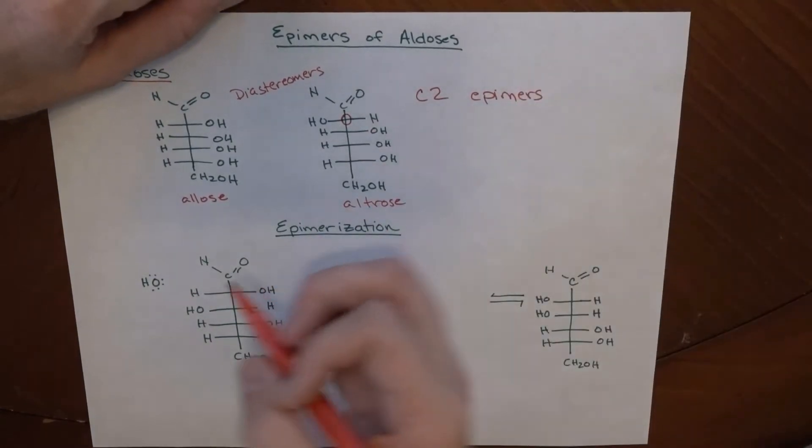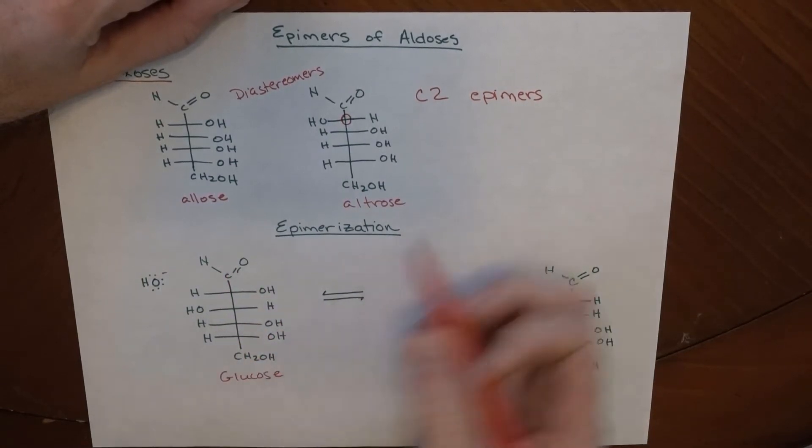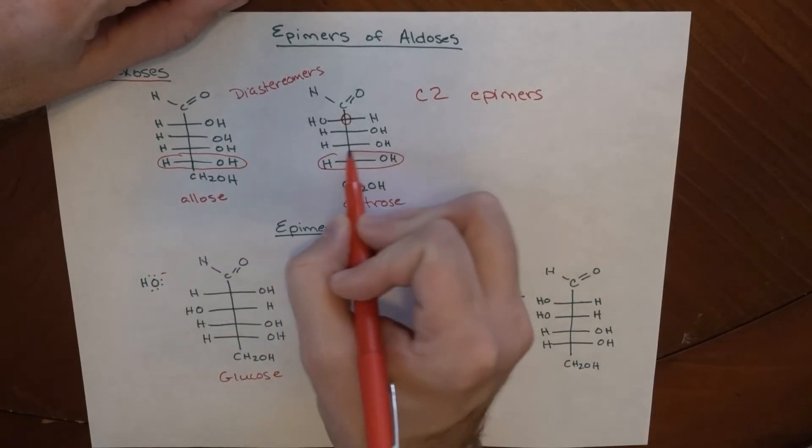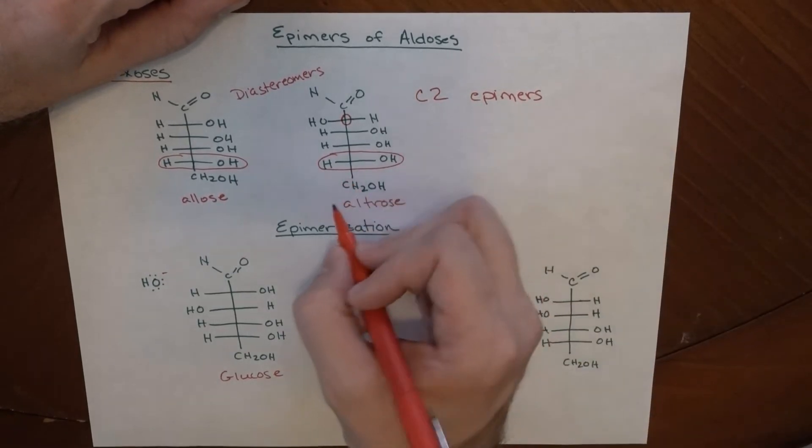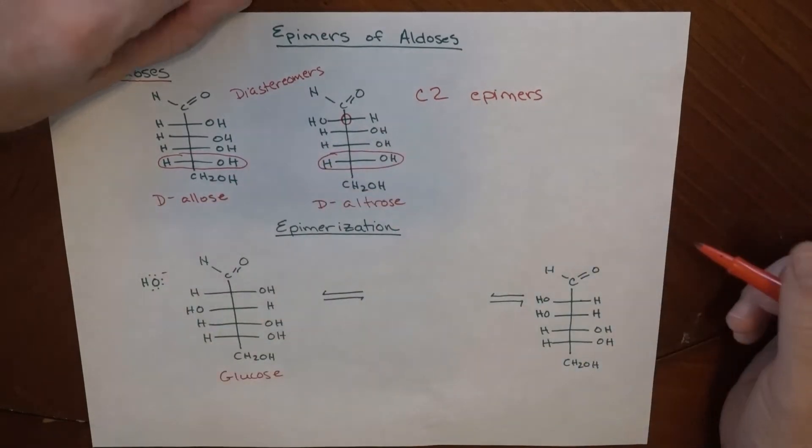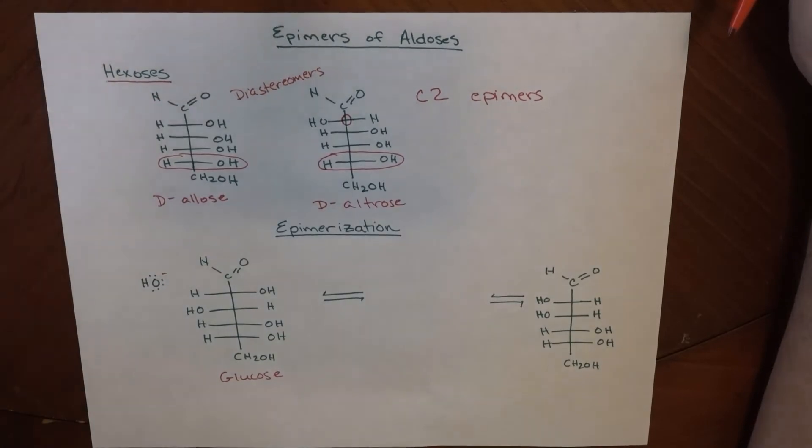Now, something like this - this is glucose. One more thing I should say about this is if we take a look here at the bottom one, and if the OH is on the right-hand side, which in just about all the ones we look at, that gives the entire molecule what's known as a designation of D. So this is D-allos or D-altros. We look at the bottom one to determine if the entire molecule is D or L.